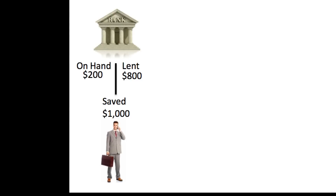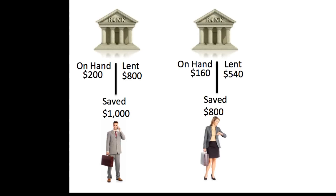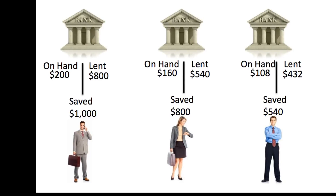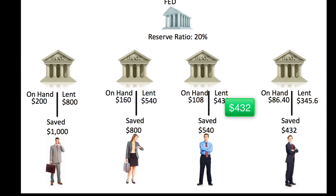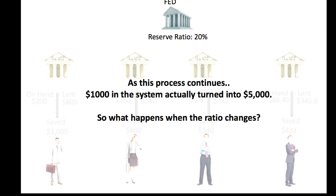Let's see what happens when the bank lends out that $800. They lend $800 to a woman, and let's say she takes the $800 and saves it in a bank. Based off the rules, the second bank has to hold 20% of that $800 — so $160 — and they have the ability to lend out $640. Now remember, we only started with $1,000. And now we're already up to another $800 in the system. The bank then lends out $640, that person saves it, the bank keeps $108 and can lend $432. The process goes on and on, and as you can see, based off that reserve ratio, $1,000 initially saved in the system actually turns into $5,000.